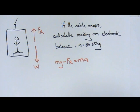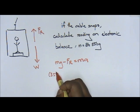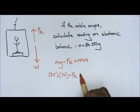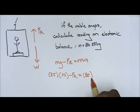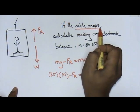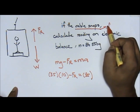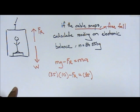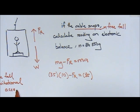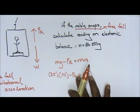Now, m given to us is 85, gravity is 10, so 85 times 10 minus FR equals mass again, 85, times a. This is the catch: if the cable snaps, we say this is free fall. Free fall means it is falling with gravitational acceleration.